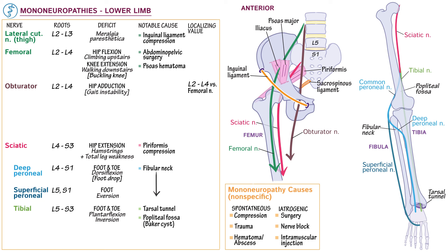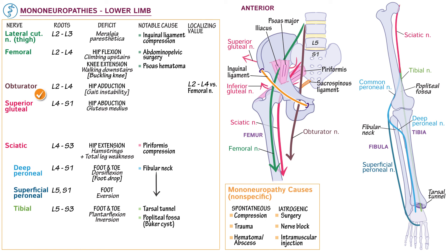Now show that the superior gluteal nerve exits the greater sciatic foramen superior to the piriformis muscle, whereas the inferior gluteal nerve exits the pelvis along with the sciatic nerve inferior to the piriformis muscle. Indicate that the superior gluteal nerve is supplied by L4 to S1 and innervates most notably gluteus medius, so failure causes weakness of hip abduction — notably, this can occur from piriformis compression. Then indicate that the inferior gluteal nerve is supplied by L5 to S2 and innervates gluteus maximus, so injury causes weakness of hip extension.